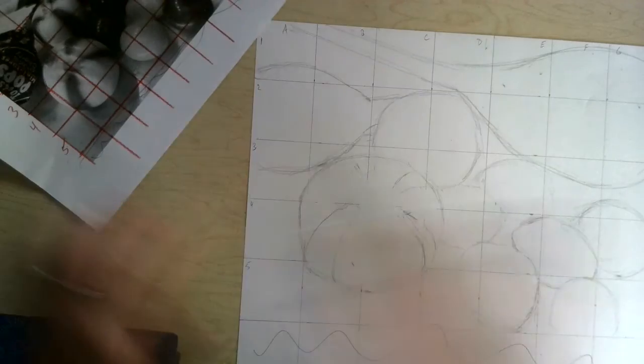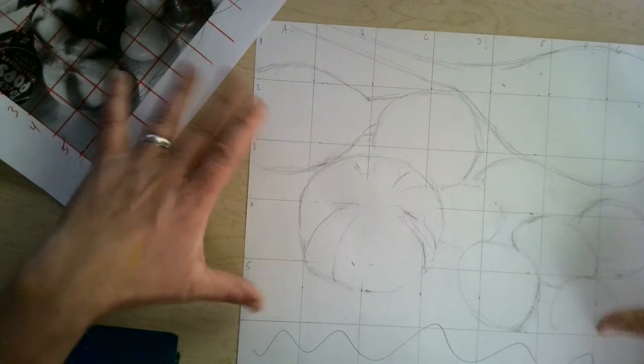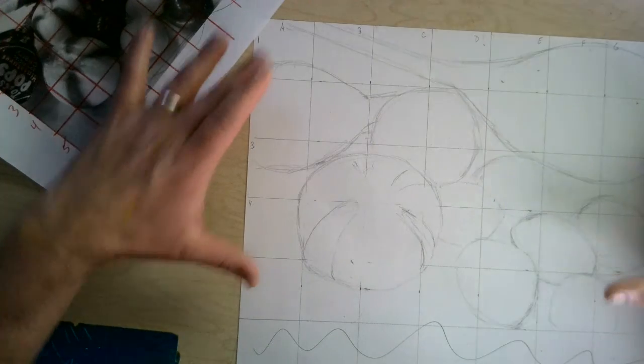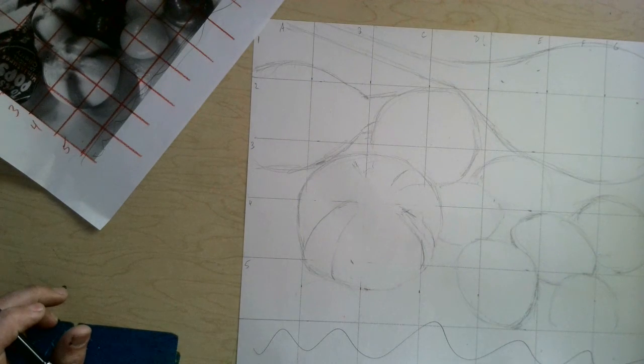So this is the first step. Continue working on, once you have it drawn as a contour line drawing, then you can start to add the details and erasing the grid lines. Thank you, all right.